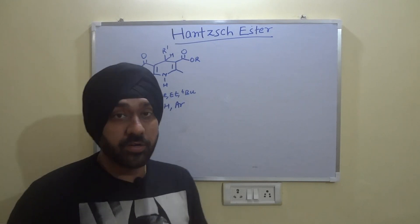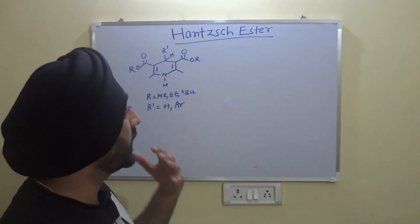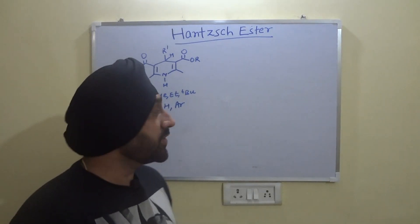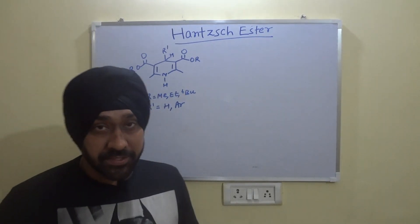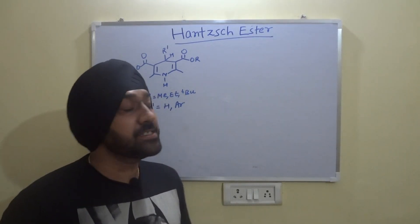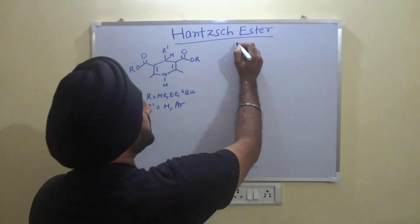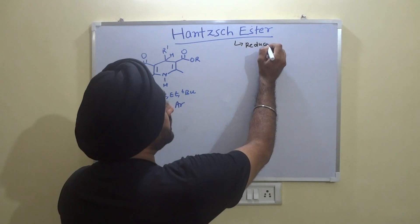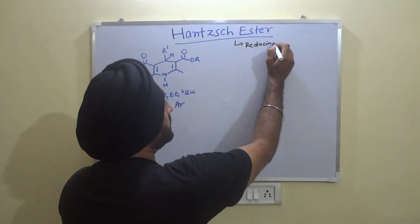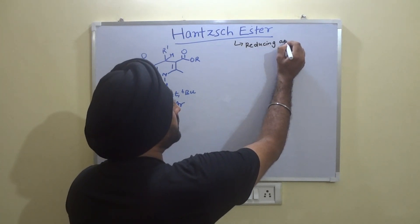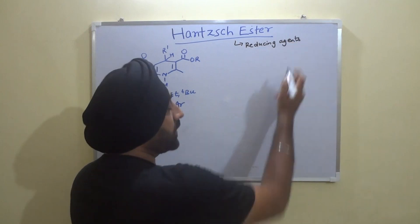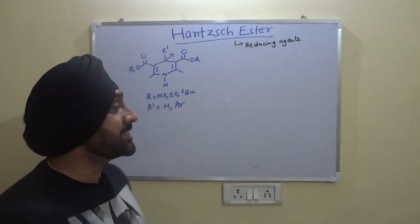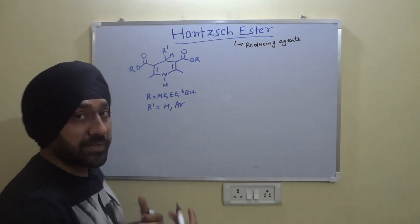Hello everyone. Today we are going to look at the chemistry of Hantzsch esters, which are very well known for their ability to act as reducing agents. If you look at the structure of Hantzsch esters, these are nothing but dihydropyridines.